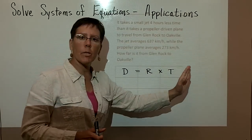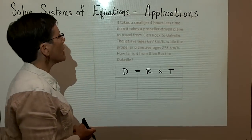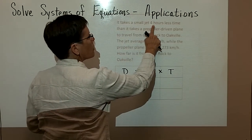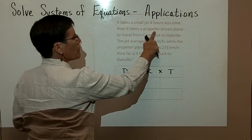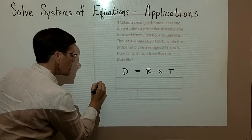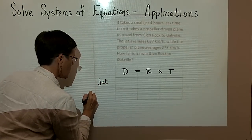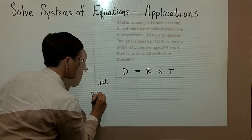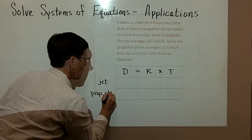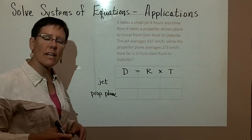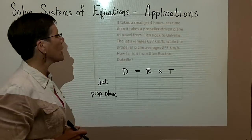You've got this table with distance equals rate times time. It's going to take a small jet four hours less time than a propeller driven plane. I like to always first come here and describe my two situations. I've got a jet and I've got a propeller driven plane.